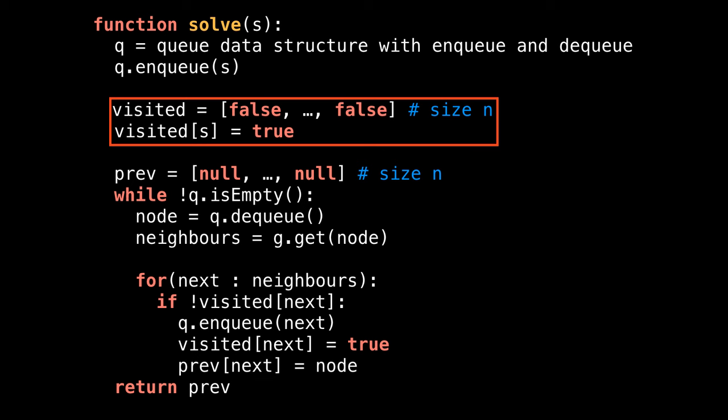This array tracks whether or not node i has been visited. If the value at index i is true, then the node has either been visited or is being visited and is on the queue. In the animation, this corresponds to the gray and yellow nodes.